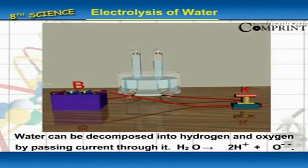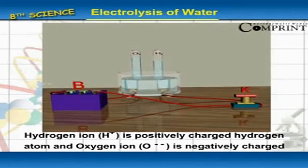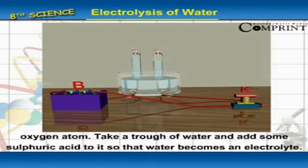H2O gives 2H plus O. Hydrogen ion (H+) is a positively charged hydrogen atom and oxygen ion (O2-) is a negatively charged oxygen atom.